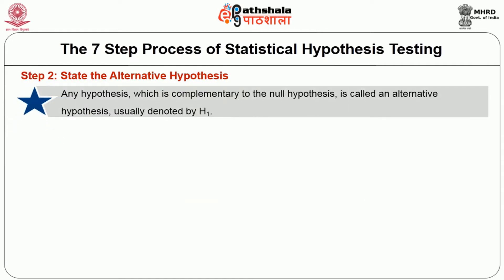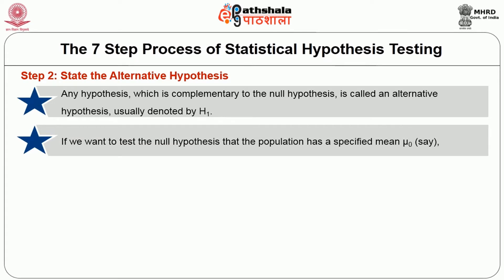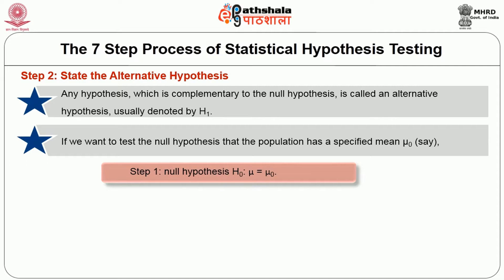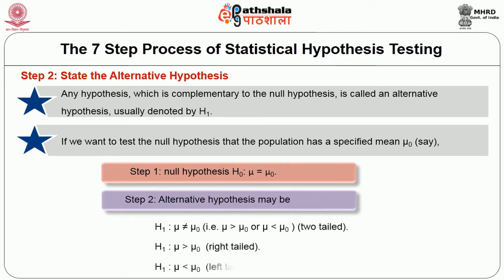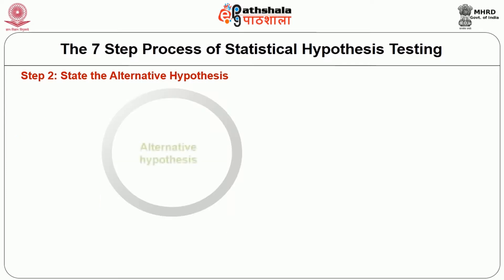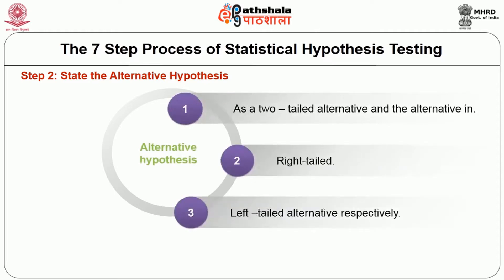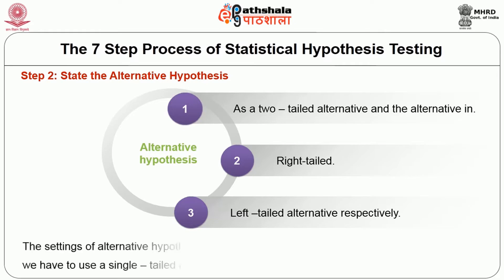Step 2: State the alternative hypothesis. Any hypothesis which is complementary to the null hypothesis is called an alternative hypothesis, usually denoted by H1 or H-alpha. For example, if we want to test the null hypothesis that the population has a specified mean, then we state the alternative hypothesis as H1: mu is not equal to mu-0. The alternative hypothesis in the first instance is known as a two-tailed alternative, the second instance is known as a right-tailed, and the third one is known as a left-tailed alternative respectively. The setting of the alternative hypothesis is very important since it enables us to decide whether we have to use a single-tailed (right or left) or two-tailed test.